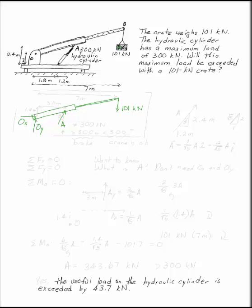A is not equal to 300 kN. 300 kN is the maximum load that we can have. What we want to know is, is this variable A going to be bigger than 300 or less than 300? If it's bigger than 300, it broke. If it's less than 300, your crane is okay.